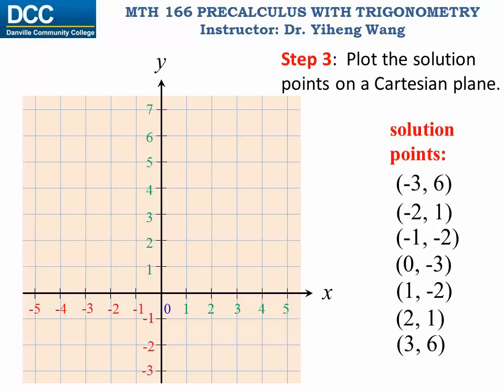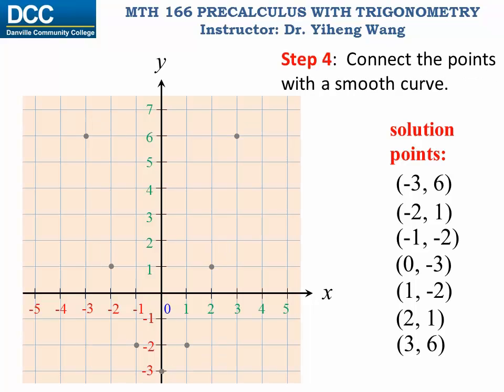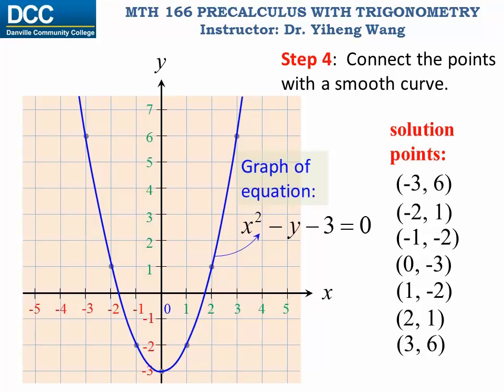Step 3: Plot the solution points on the rectangular coordinate system. Step 4: Draw a smooth curve through these points. And this curve is the graph of the equation. Again, this curve extends beyond the background. It is the collection of all solution points, infinite number of them, to the equation. And from this curve we can visualize how the y values change with the x values.